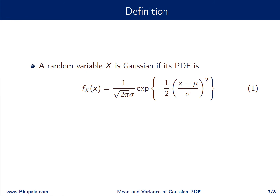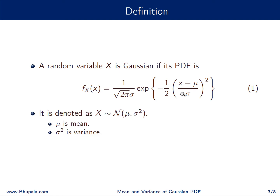A random variable X is said to be Gaussian distributed if its PDF is of the following form: f_X(x) = (1 / (√(2π) σ)) × exp(−(1/2) × ((x − μ)/σ)²). In shorthand notation we denote this as X ~ N(μ, σ²), where μ and σ² are the parameters of the Gaussian distribution, termed as mean and variance.